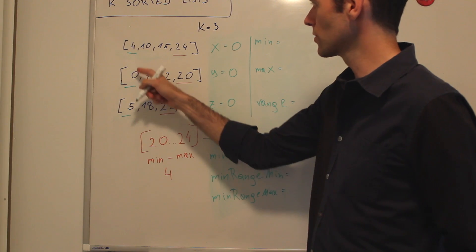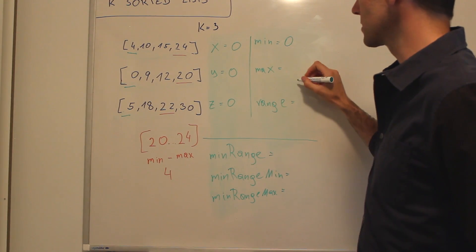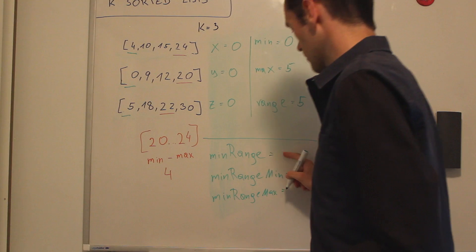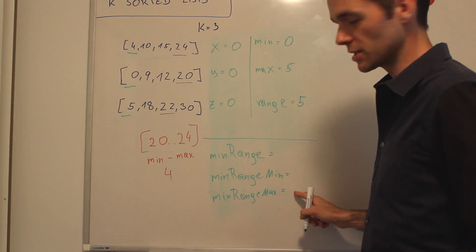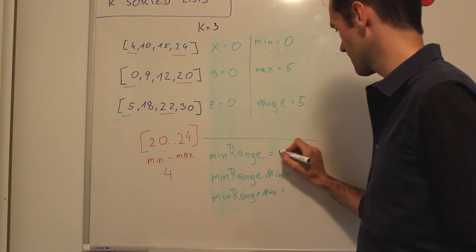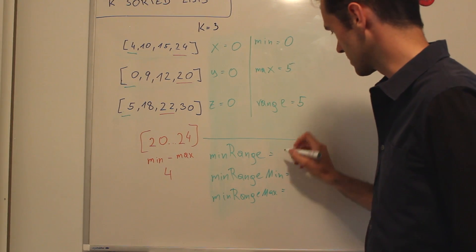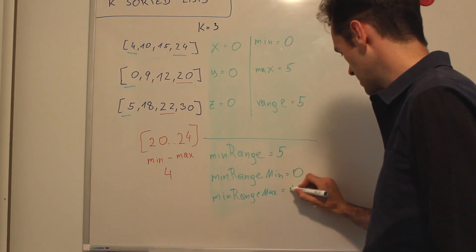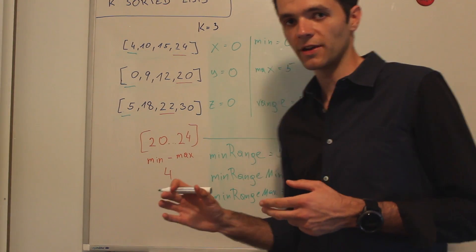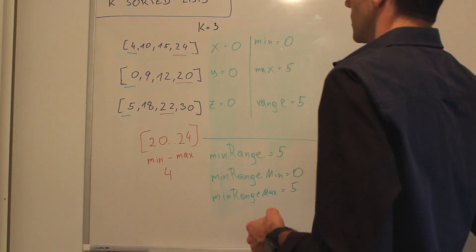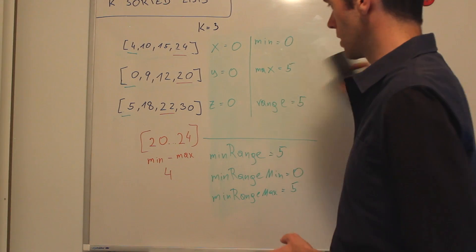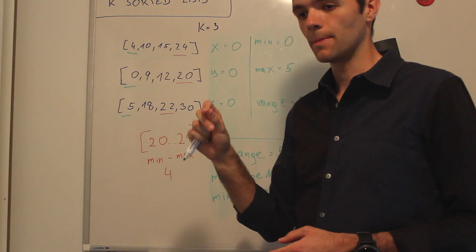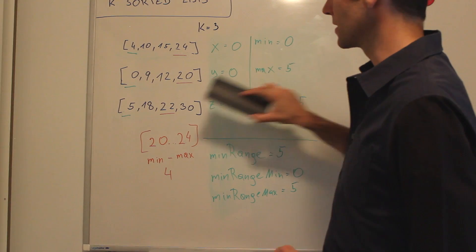Let's get started. We have 0, 4, and 5. Obviously the minimum element is 0 and the max is 5. Calculating max minus min will be 5. We don't have any values initialized yet, so we're going to fill them up with this first step — the min range is 5, the min range min being 0, and the min range max being 5. This was our first loop iteration. We're going to do the same again and again. The minimum element is 0, and we're going to move one pointer — we always move the pointer pointing to the minimum of its list. In this case it's the 0, and now it points to 9.